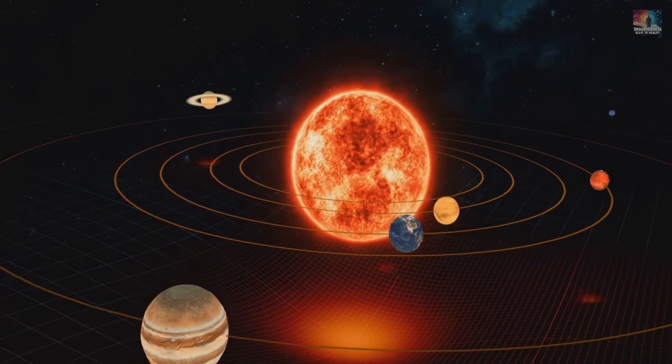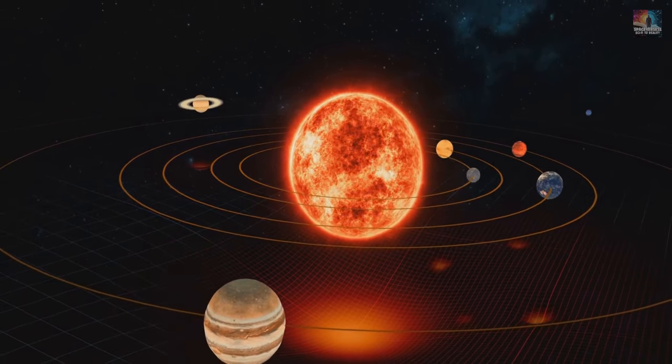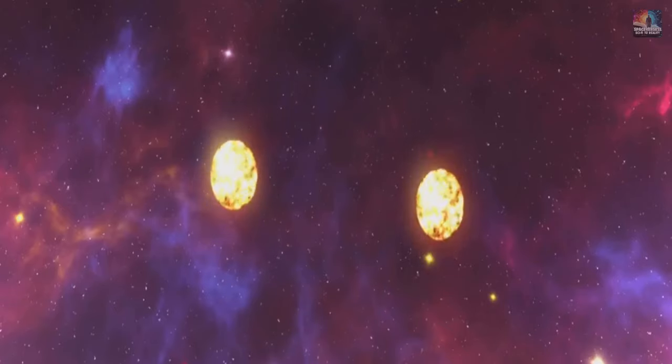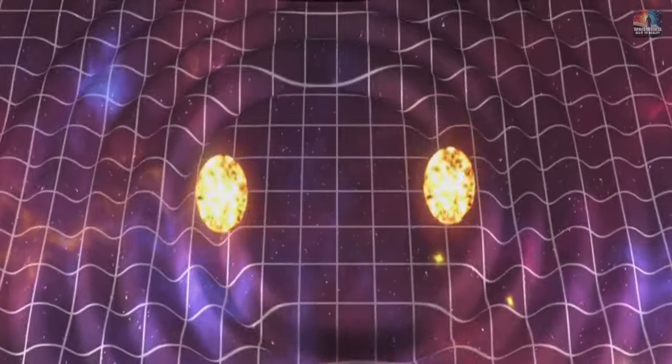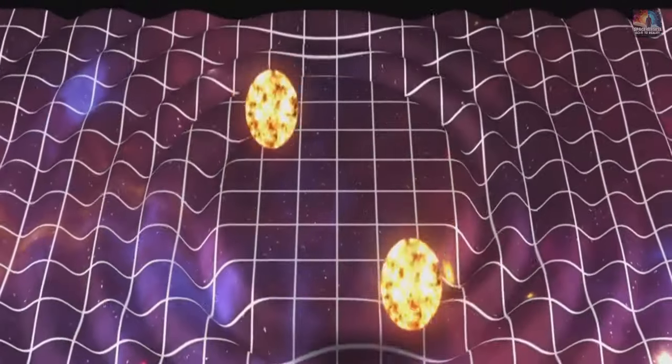He figured out a way to use math to understand how two things, like the Earth and the Sun, move around each other. This was huge because it let scientists predict exactly where planets would go and how the Moon moves around the Earth.